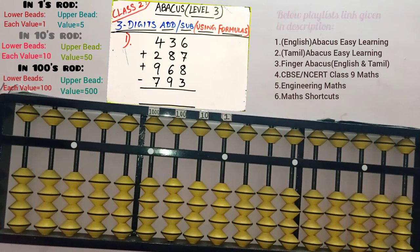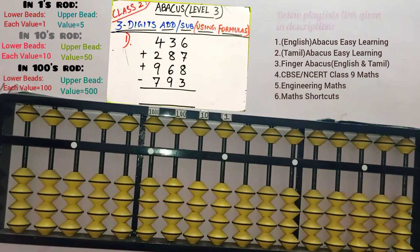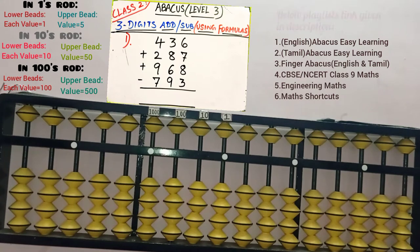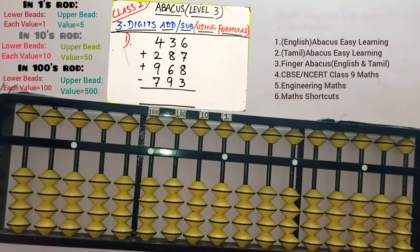Let's see the first problem: 436 plus 287 plus 968 minus 793. We are having 4 rows here. Let's start from the first row.